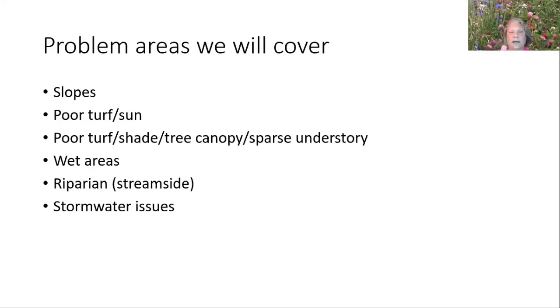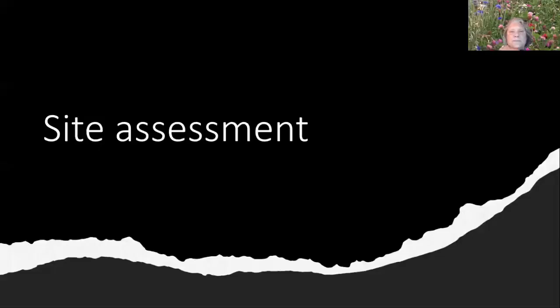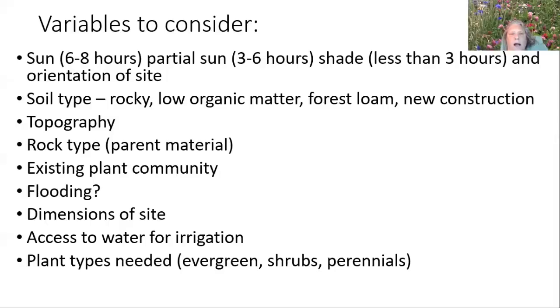These are the areas we're going to cover: slopes, poor turf in the sun, poor turf in the shade, wet areas, riparian or streamside areas — also called RPAs or resource protection areas — and then a few things on stormwater solutions. The first thing you want to do is take a look at your site, and I would suggest looking at it over a longer period of time during different weather conditions. What it's doing now in the drought is going to be different than what it would do in a wet fall or a very cold winter. Full sun is considered six to eight hours and partial sun about three to six hours.